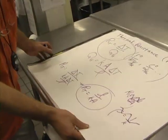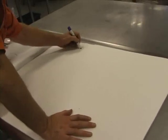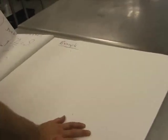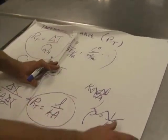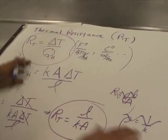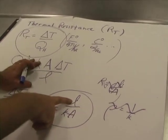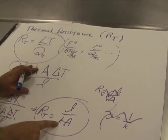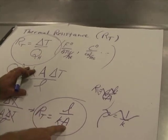So we should do an example of this. Let's make sure all this makes sense. It should make sense that the bigger the thickness, the more thickness, the more thermal resistance it has. The bigger the conductivity, the lower the thermal resistance. The bigger the area, the lower the thermal resistance.